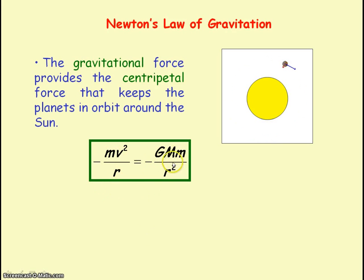Minus GMm divided by r squared is the gravitational force from Newton's law of gravitation, where G is the universal gravitational constant, and capital M is the mass of the sun. The minus sign indicates that the force is towards the centre of mass of the sun. We can use these equations to determine the orbital period of a planet orbiting the sun.